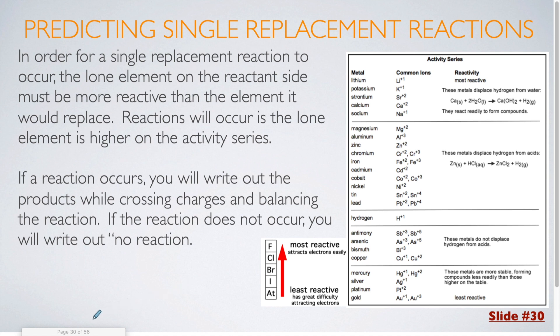If a reaction occurs, you will write out the products while crossing charges and balancing the equation. If the reaction does not occur, you will write out no reaction on the right side of the arrow.